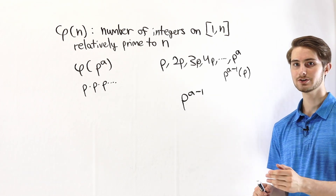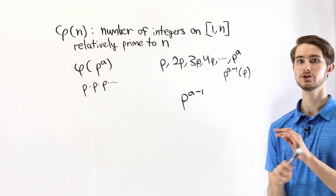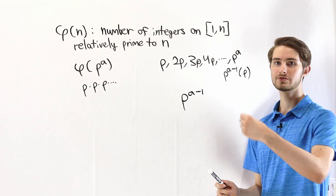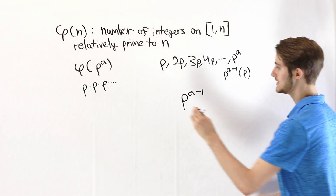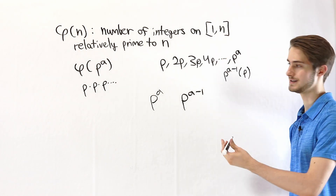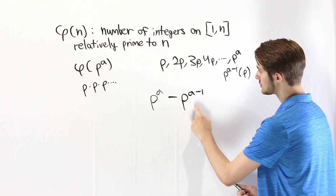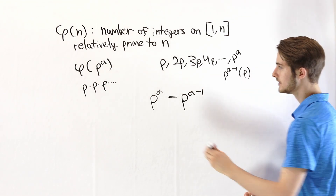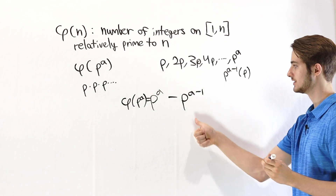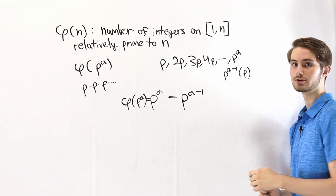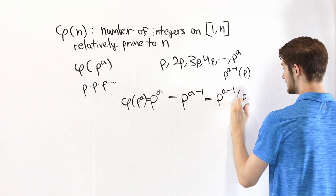But remember our goal is not to find all the numbers that share a factor with P to the A — our goal is to find all the numbers that are relatively prime, meaning they share no factors with P to the A. That's going to be all of the numbers except the multiples of P. The total count of numbers in the interval is P to the A. We subtract all the numbers that share a factor with P to the A, which is P to the A minus 1. So φ(P^a) equals P to the A minus P to the A minus 1, and we can factor out P to the A minus 1 to get P to the A minus 1 times P minus 1.